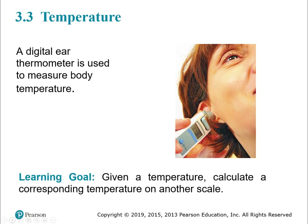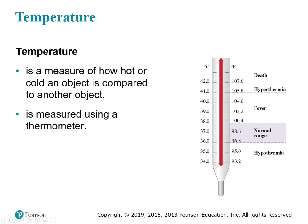We've covered classifying matter, states of matter, and physical and chemical properties and changes. Now we're shifting to energy. Temperature is related to energy because we're talking about heat and kinetic energy in a system. The best example is using a thermometer to measure body temperature. The temperature of something is just how hot or cold it is in comparison to something else, and you measure it with an instrument — a thermometer.